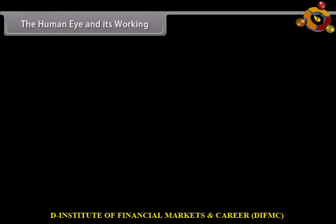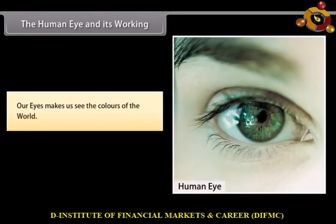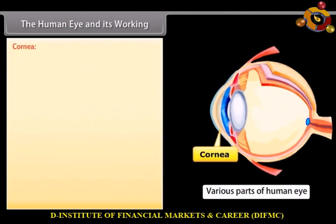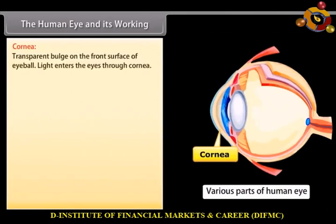The human eye and its working. Our eyes make us see the colors of the world. The human eye has a crystalline lens and it works like a camera. Various parts of the eye along with their functions are: Cornea — it is the transparent bulge on the front surface of the eyeball. Light enters the eyes through the cornea.